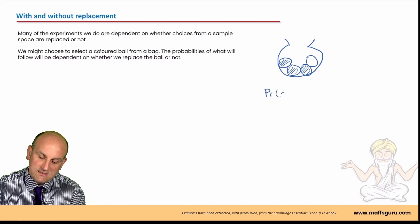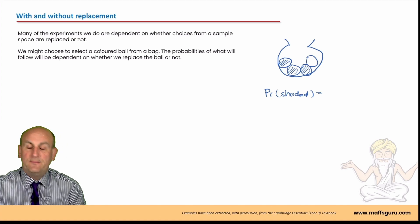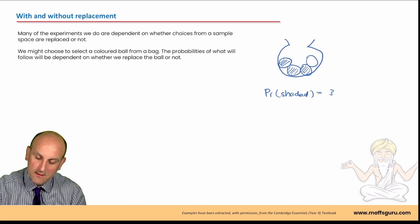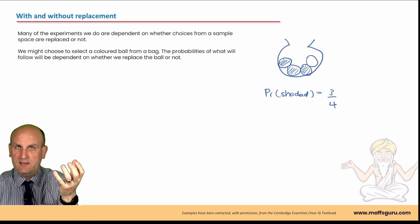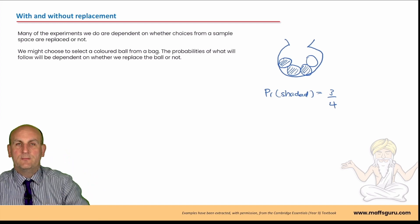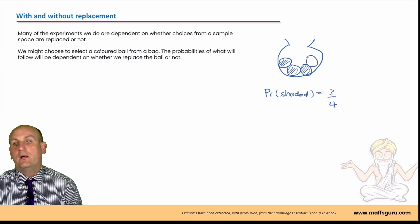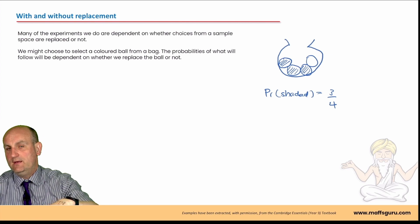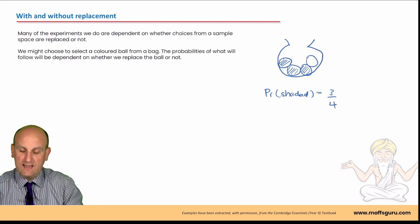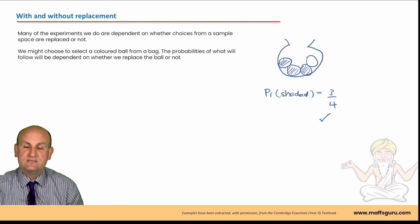I'm going to take a spherical object from that bag. And, I want to know what's the probability of a shaded. So, the probability of shaded is going to be how many shaded there were, three, divided by how many there were in total, four. Now, I've got that shaded one in my hand. I'm going to drop it back in the bag. I'm going to slush the bag around and ask you, what is the probability of getting a shaded again? Well, there's three shaded in the bag out of four. So, again, the probability would stay the same.